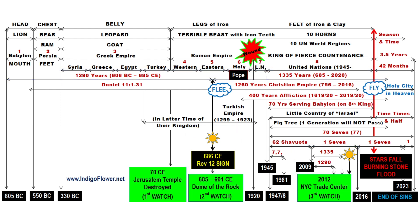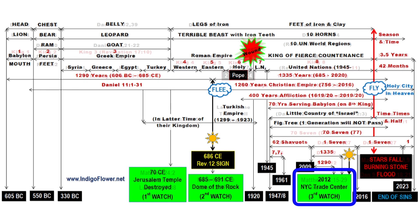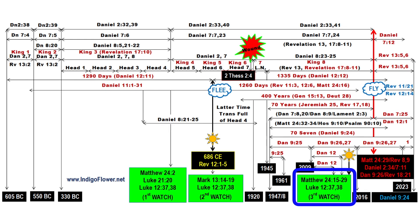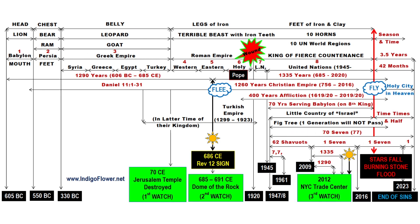The recent fulfillment of Daniel 12 was secondary to the major fulfillment which occurred in 685 CE, and that blessed day will not occur until 2020. The green box under that recent fulfillment in 2012 says 2012 NYC Trade Center — 3rd Watch. That is a reference to Matthew 24:15 and 29, and Luke 12:37 and 38. Those events, we are told, will occur before the woman flies, which is explained in Revelation 12:14.